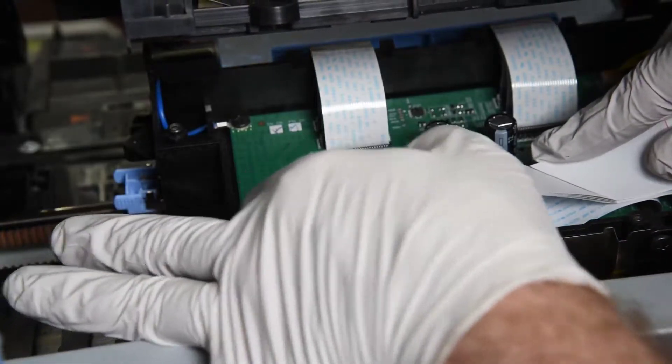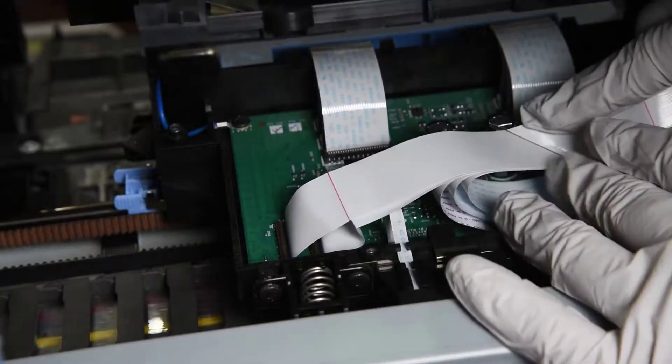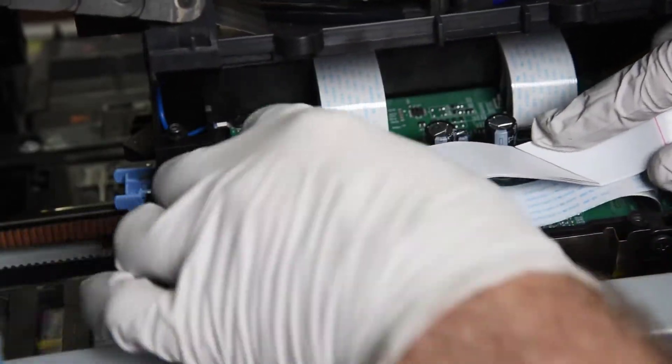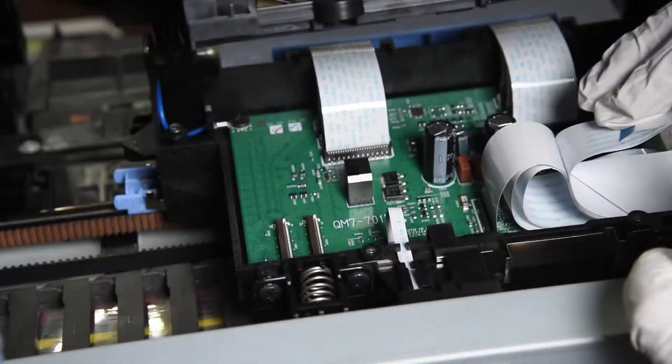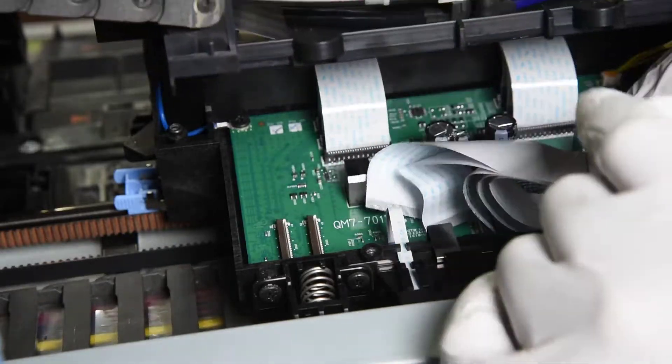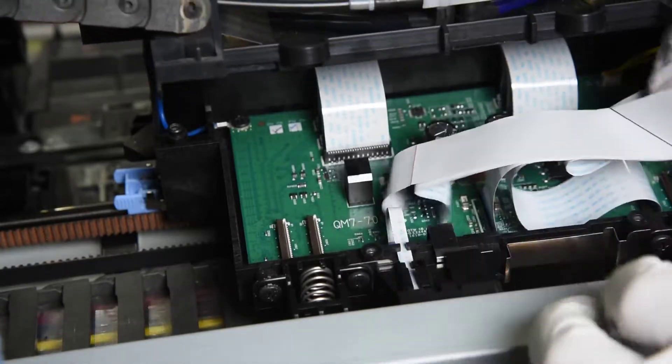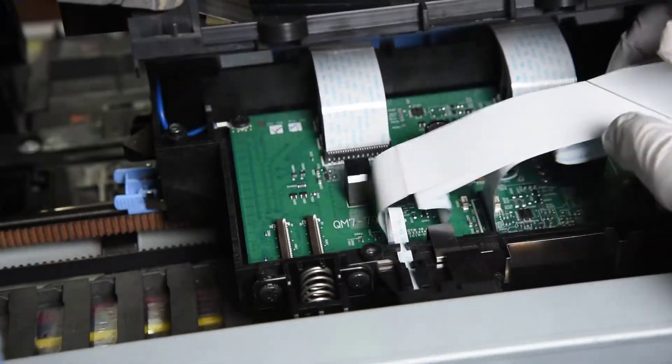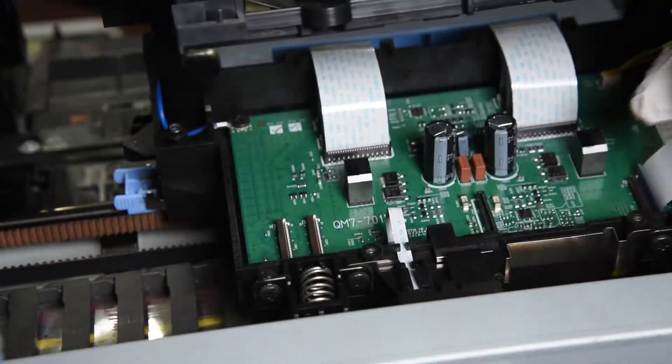The four fine pitch cables are in connectors that have a lever that has to be lifted to unlock the cable. The coarser pitch cable is in a press fit connector, so just have to pull it out.